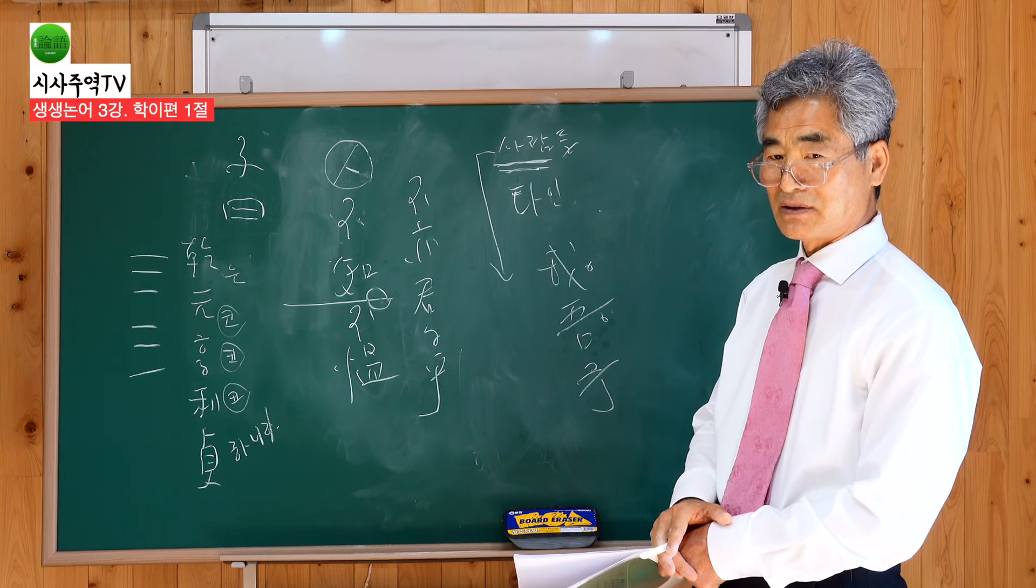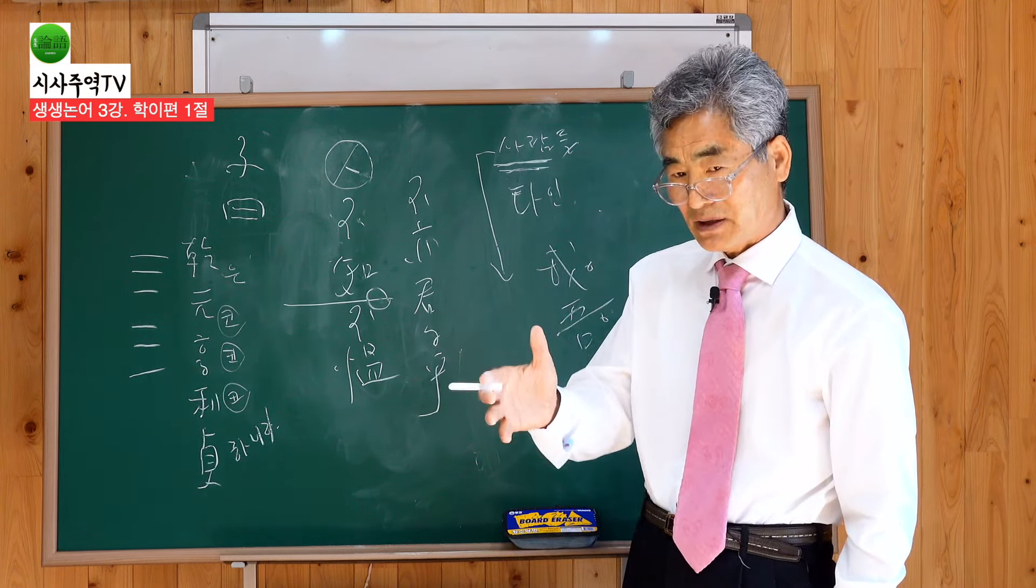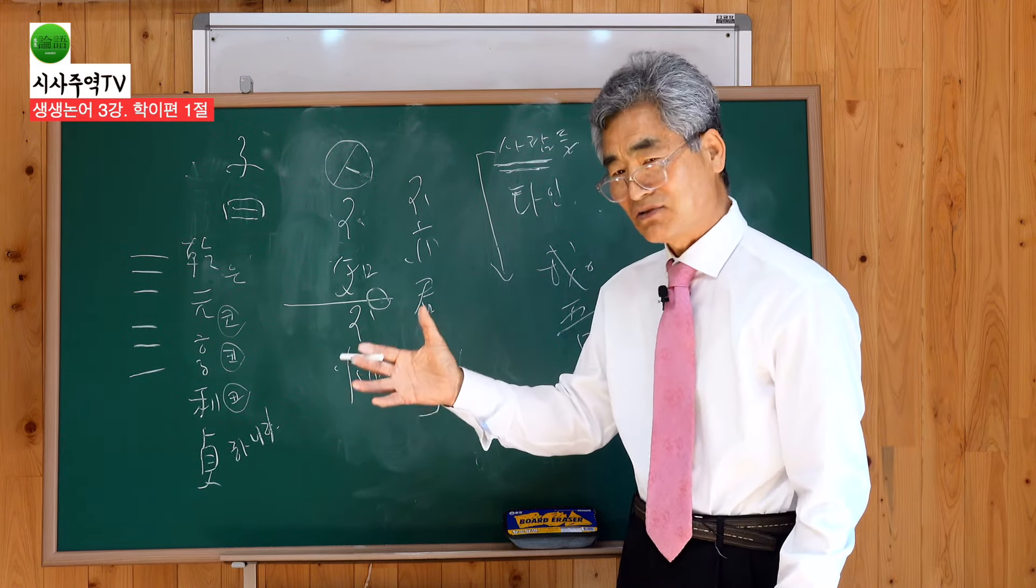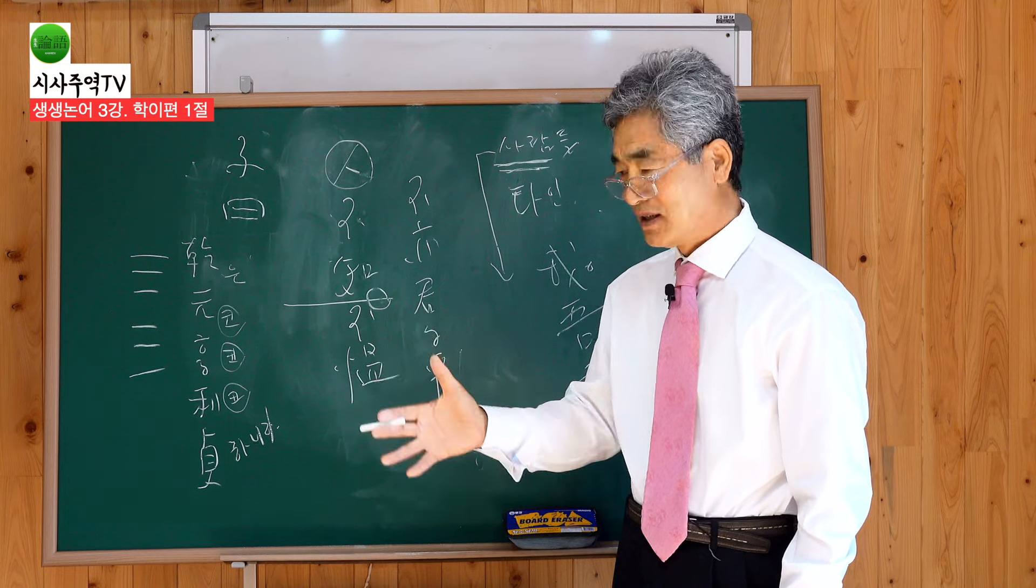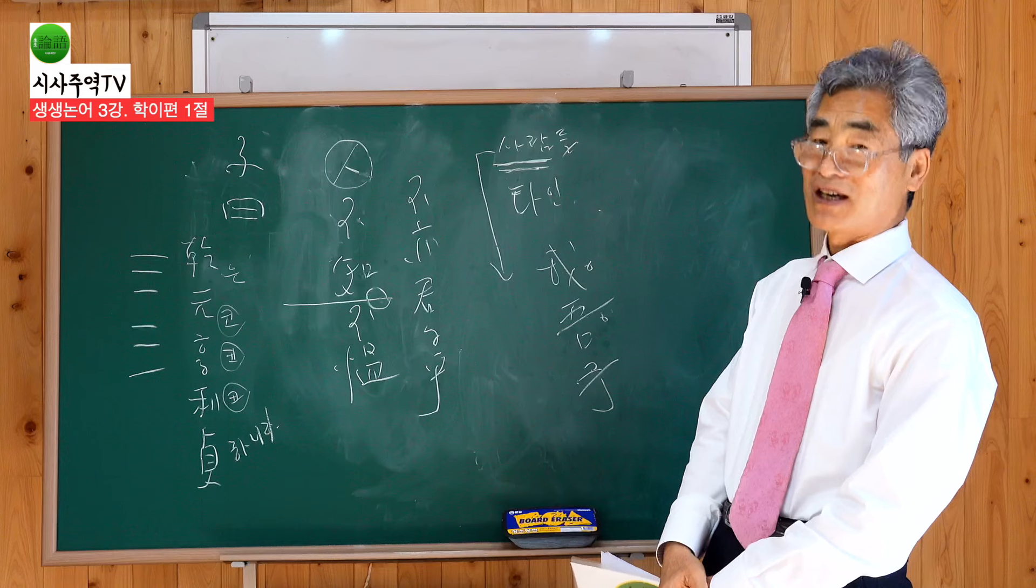낚시꾼도 그렇잖아요. 내가 한 3시간 차고 있어. 그런데 나 한 말도 안 물어. 옆자리에서 막 푸다닥푸다닥 수시로 막 가. 내가 옮겨봐. 내한테도 안 물어. 즐겁게. 즐겁게. 오래 장구하게.